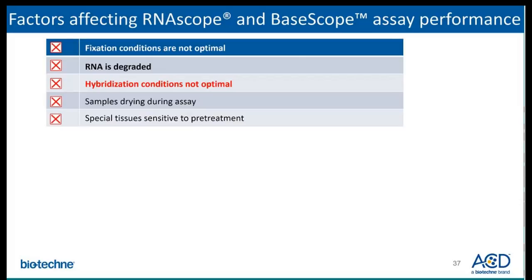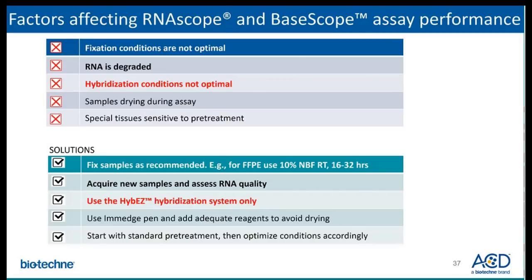When running the RNAscope or BaseScope assay, factors that could affect the outcome of your results include fixation conditions not being optimal or hybridization conditions not being optimal. These issues can be addressed by fixing samples as recommended and using the HybEZ hybridization system for optimal hybridization conditions.